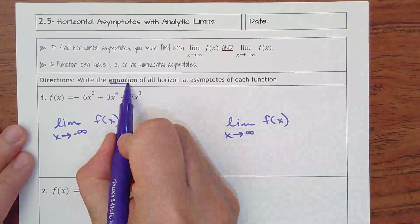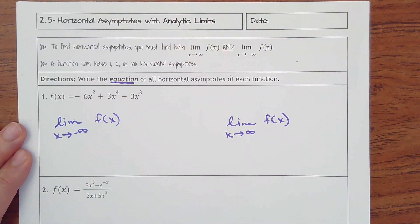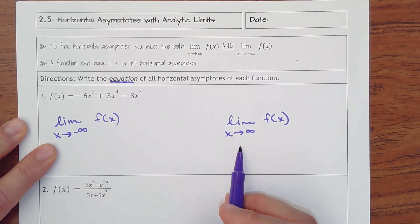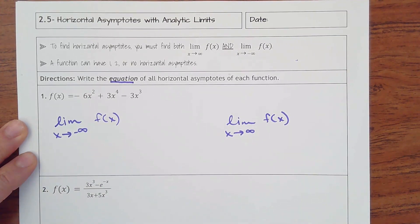So it says write the equation, not just a number, write the equation of all horizontal asymptotes of each function. So I went ahead and put my limit as x goes to the left and to the right, and then this builds on the last lesson.